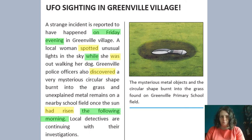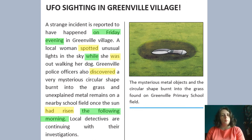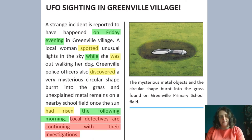Now in green I've got my words and phrases to show time: 'on Friday evening', 'while', 'the following morning' — all of those things are talking about when things happened. The next colour should be blue, but you might have noticed there are no quotes in this part of the newspaper report, so I don't have anything to highlight in blue. I'll give you a clue — that comes later on, so maybe you'll be able to find some quotes from important people in the bit you're going to read. And my last bit is in red — that is what's happening now. 'Local detectives are continuing with their investigations' — that's what's happening now. The UFO was spotted yesterday; now the police are investigating. So I've put that in red.